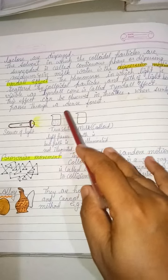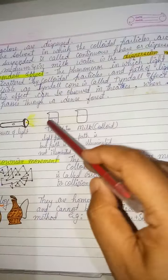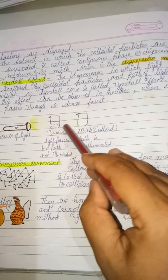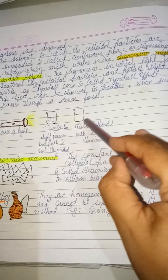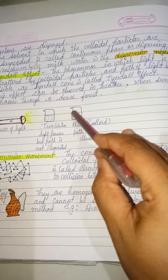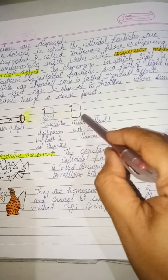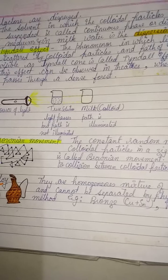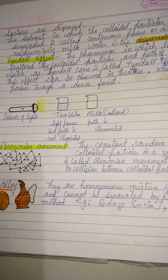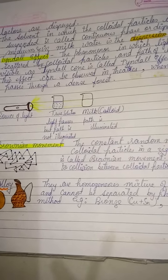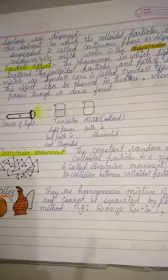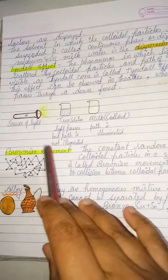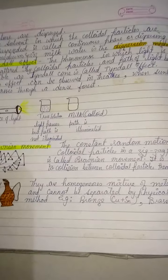The Tyndall effect can be demonstrated in the lab. With a true solution, you will not observe any cone, but when light passes through a colloidal solution, the path of light becomes clear. The formation of this cone by colloidal particles is known as the Tyndall cone.